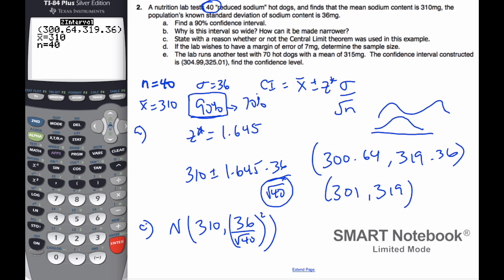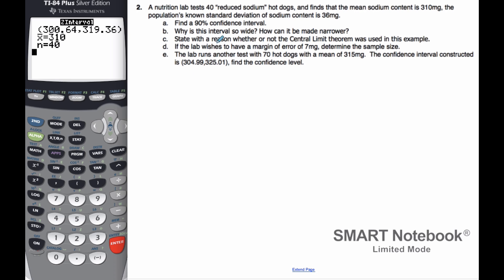All right, so if we go to part D now, the lab wishes to have a margin of error of 7 milligrams. Well, if I have a confidence interval, here's the x̄ I get. I want this calculation here to be 7 milligrams. So I want to determine the sample size, and I'm going to assume that I still want a 90% confidence level. So that means my Z star times σ over root n has to equal 7.